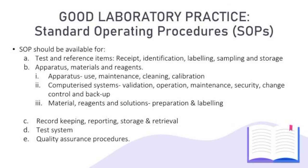The GLP document had outlined several areas that must provide the SOP. These areas include: the process of receipt, identification, labeling, sampling and storage of the test and reference items; the procedures of maintenance, cleanings, calibrations and preparations of the apparatus, materials and reagents; the procedures for record keeping, reporting, storage and retrieval; the protocols on the management of the test system; and the procedures involved in the management of the quality assurance programs.